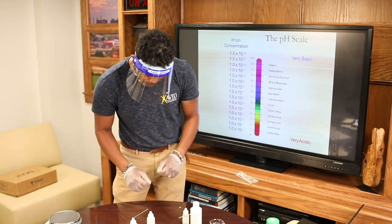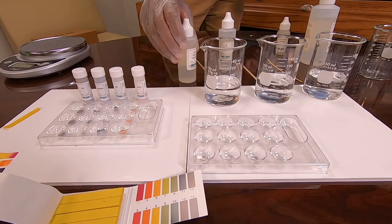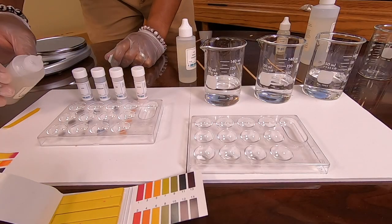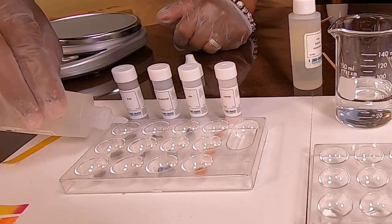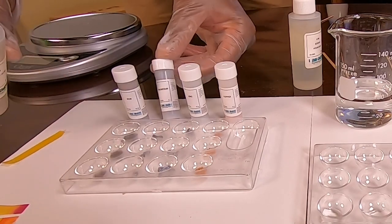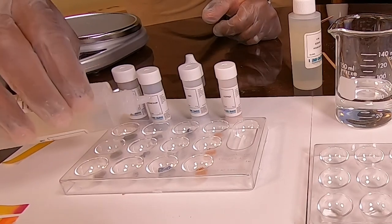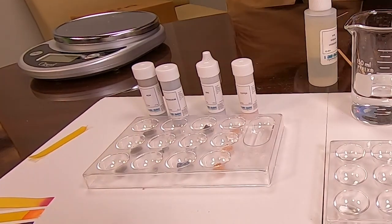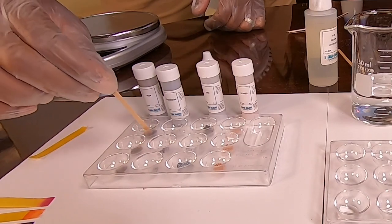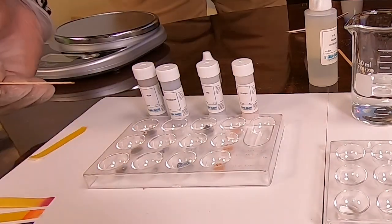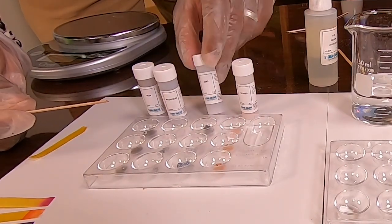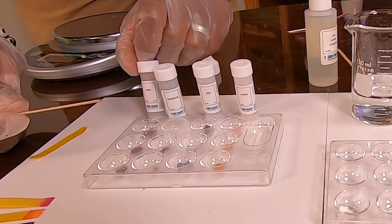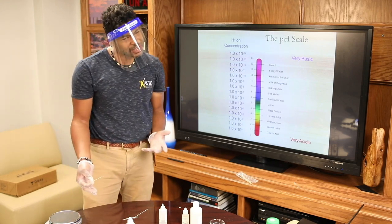Let's look at our two acids and how they react with metals. Starting with the weaker one — our acetic acid, think of it as orange juice or lemon juice. We're adding it to iron, then magnesium, then zinc, and finally copper. You're getting bubbles with the magnesium and a few bubbles with the zinc, but there's nothing happening with the copper or the iron. We'd call that a definite reaction with the magnesium and zinc, but not so much with the other two metals.